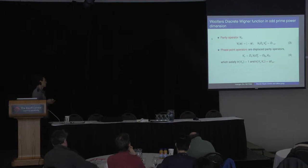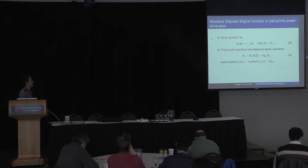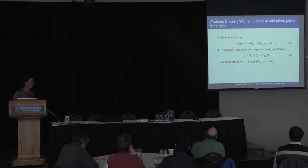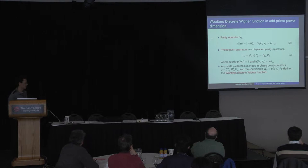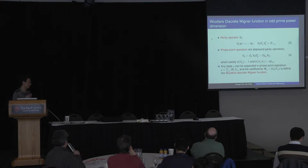One way to define this is to use the phase point operator. First, there is the parity operator — basically to realize inversion in phase space. The phase point operator basically displaces the parity operator. This operator forms an orthogonal basis in the operator space, and also forms a unitary basis. Any state can be expanded in terms of these phase point operators, and the coefficients are just Wootters' discrete Wigner function. Wootters introduced this function with a slightly different but equivalent definition, with the goal to understand discrete quantum systems in comparison with continuous systems.